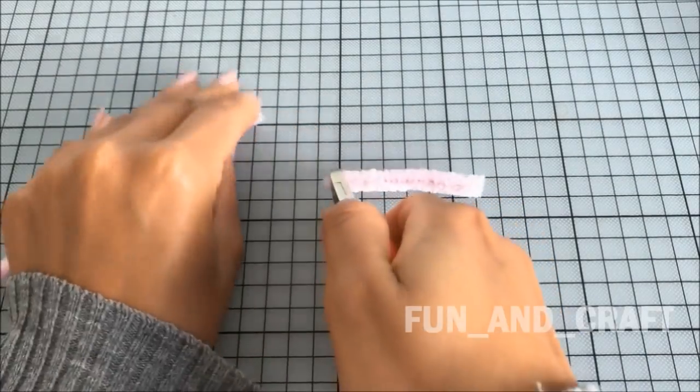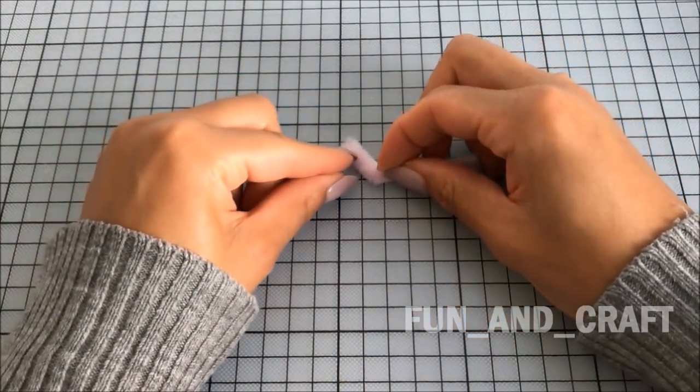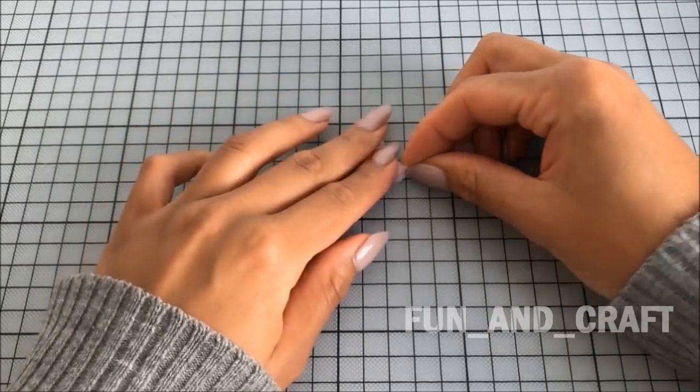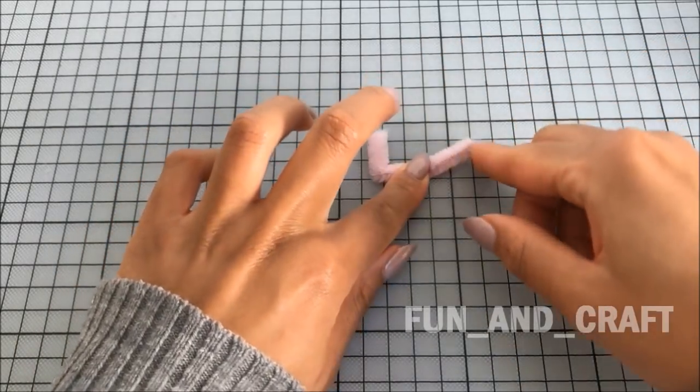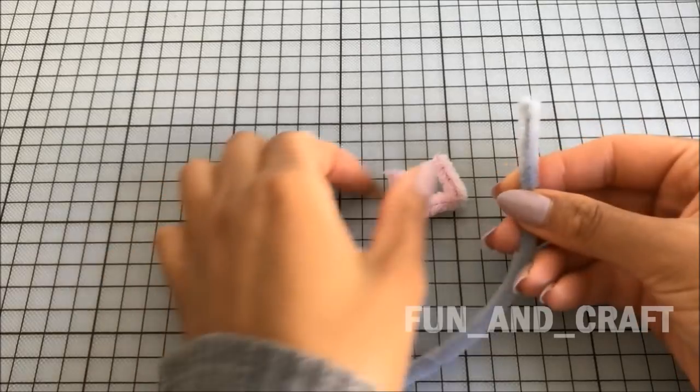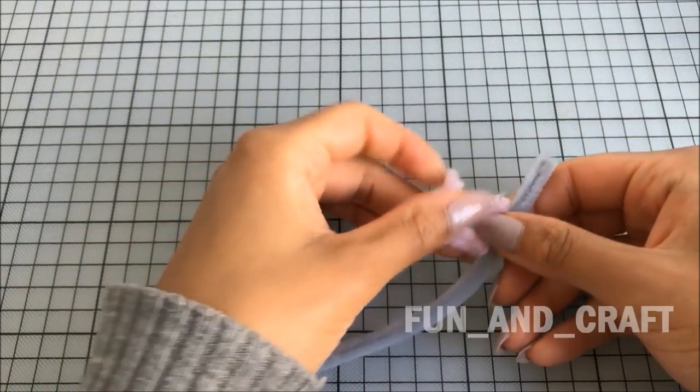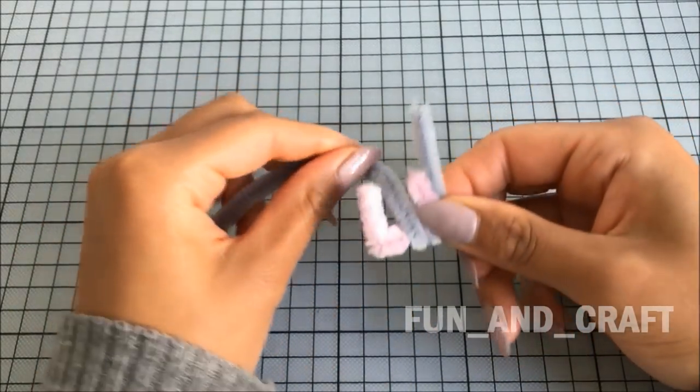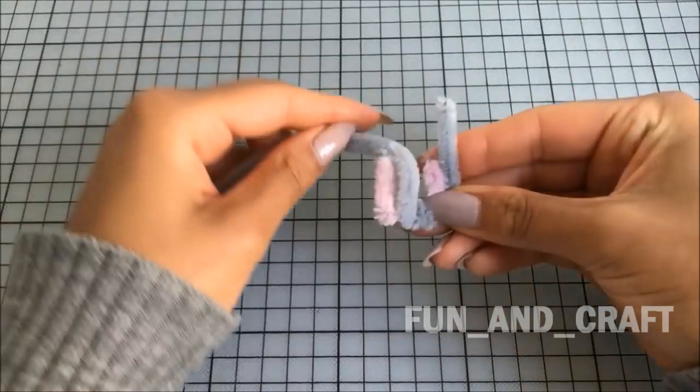First, you will need a pink pipe cleaner that is about six centimeters long. Bend it into three equal pieces like this and place a gray pipe cleaner next to it. Make sure that the end pointing upwards is at least twice as long as the pink one. Now wrap the gray pipe cleaner around the middle part.